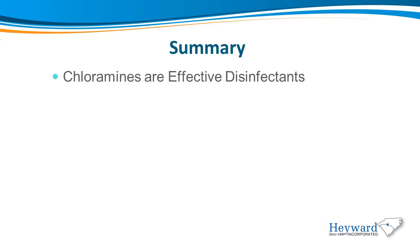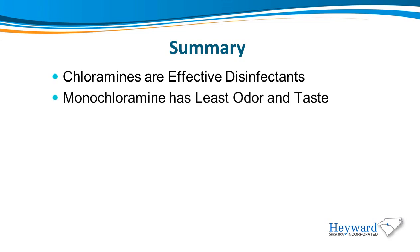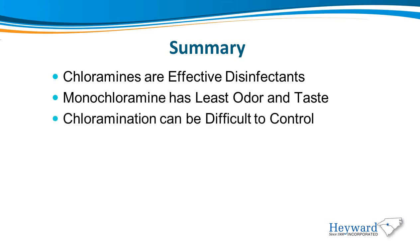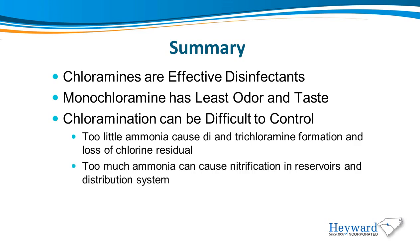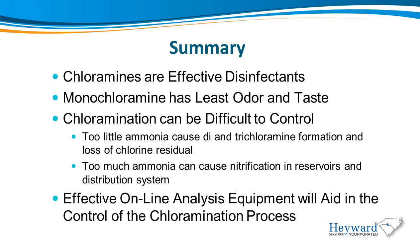In summary, chloramines are effective disinfectants. Monochloramine has the least taste and odor and forms the least trihalomethanes. Chloramination can be difficult to control. Too little ammonia causes dichloramine and trichloramine formation and a loss of chlorine residual. Too much ammonia can cause nitrification in reservoirs and distribution systems. Effective online analysis equipment will aid in the control of the chloramination process.